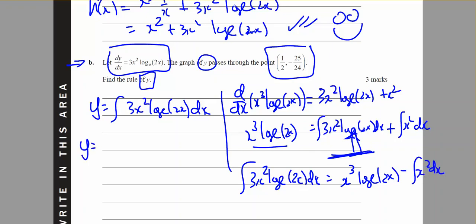So y is then going to equal this, it's going to be all of this plus c, so x cubed log base e of 2x minus x cubed over 3 plus c.